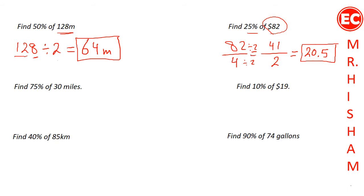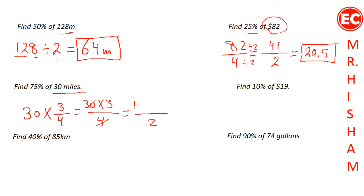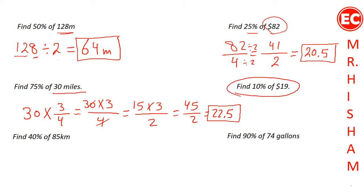To find 75% of 30 miles, multiply 30 by 3 over 4. Multiply 30 by 3 to get 90, then divide by 4. Simplifying by dividing up and down by 2 gives 45 divided by 2, which equals 22.5 miles. To find 10% of 19, divide 19 by 10. Since there's no decimal point written, place one and move it one place to the left, giving 1.9.